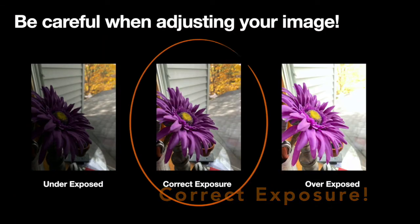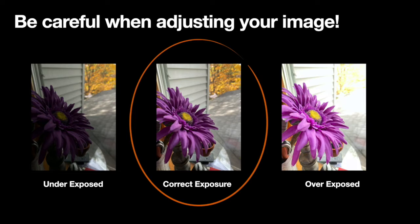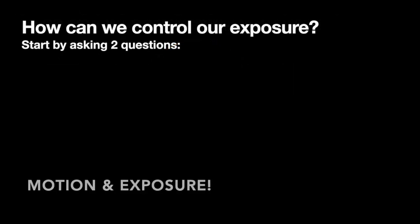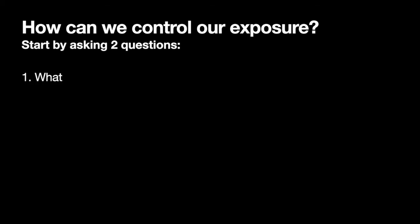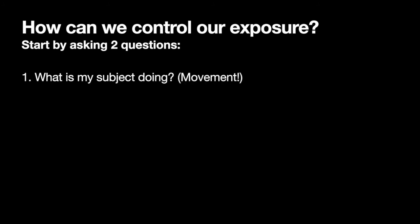Your goal is to get the correct exposure by just touching and letting the light adjust. When we want to control our exposure, we can use the Lightroom app, or if we're lucky enough to have a camera where we can control it, we start by asking two simple questions. The first one: what is my subject doing? Meaning, what is the motion of my subject — is it still, is it moving?